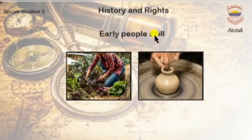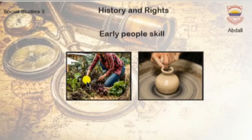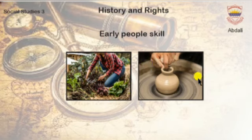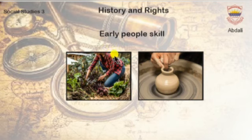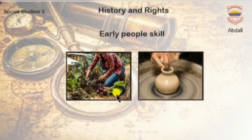Our next slide is Early People Skills. Which skills did early people learn? People learned how to grow food. They also learned how to make pots out of clay and bake them in a fire, so that they could hold water and food.